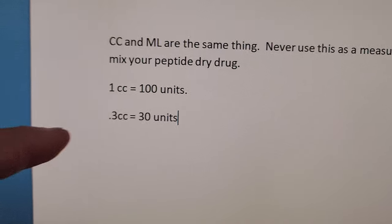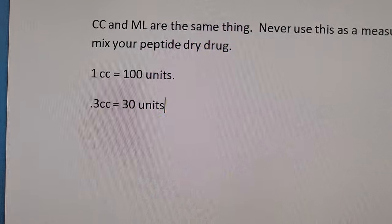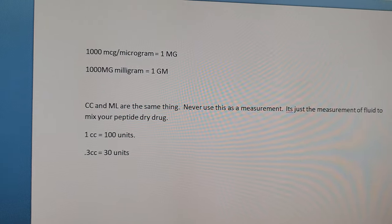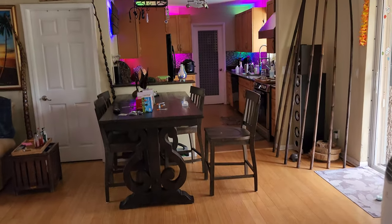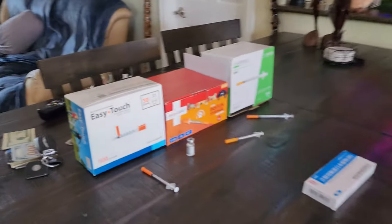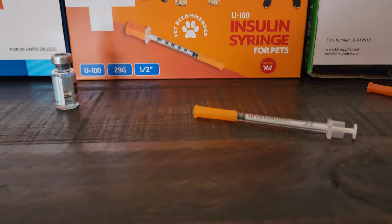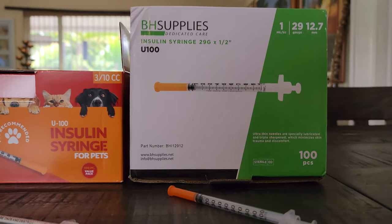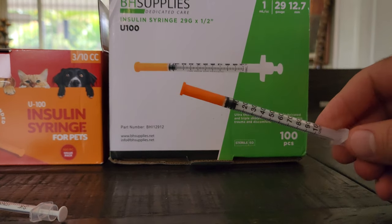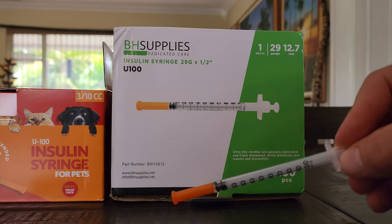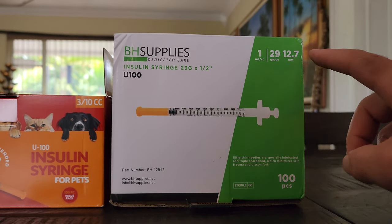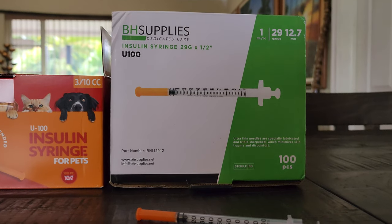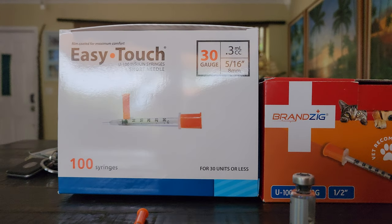30 units on the 1 cc syringe is the same as 30 units on the 0.33 syringe — even though the syringe is smaller. Let me come over here and show you the stuff I have on the table. These 1 cc syringes from BH Supplies are awesome — individually packed, 100 units, 29 gauge. When you get these, make sure they are U100s.